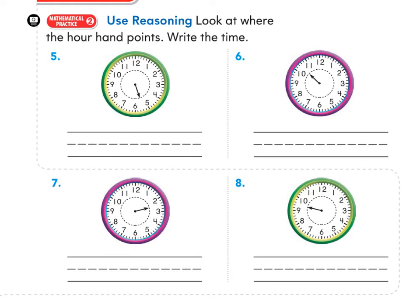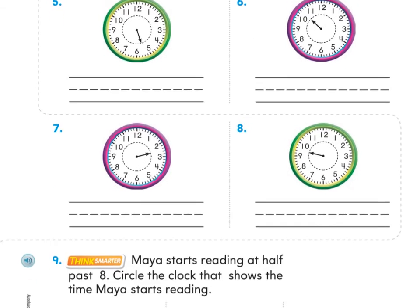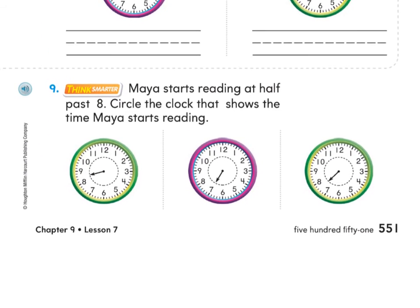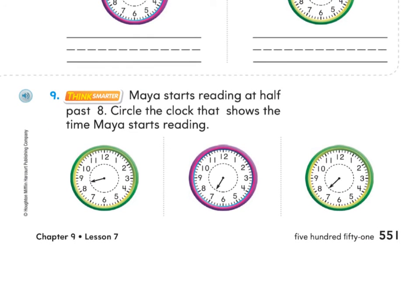Then when you're ready, move on to number nine. Number nine says Maya starts reading at half past eight — circle the clock that shows the time Maya starts reading. There are three options, so you're going to circle the time that shows half past eight. There's only one correct answer.